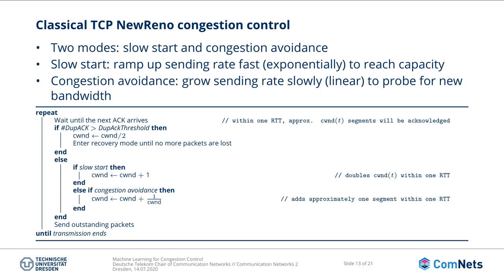Let's have a look at the classical TCP New Reno congestion control algorithm. The algorithm was designed during a time when most networks were completely wired, and whenever packet loss was seen, there was a very high probability it was caused by congestion rather than occurring randomly. This is why TCP New Reno is a pure loss-based protocol — whenever it sees a packet loss, it immediately infers it was caused by congestion. It operates with two modes. The first mode is slow start, where the goal is to ramp up the sending rate exponentially fast until we reach the bottleneck capacity. Because we ramp up exponentially fast, we actually overshoot, and we have to reduce our sending rate after slow start detects its first packet loss.